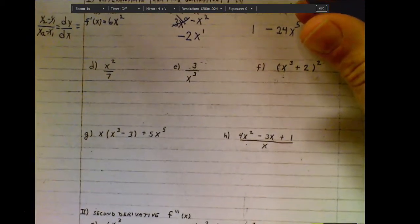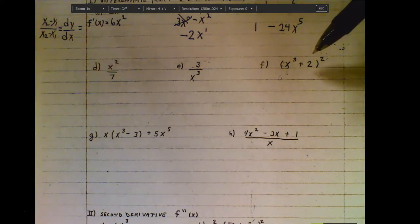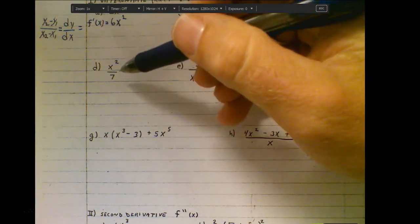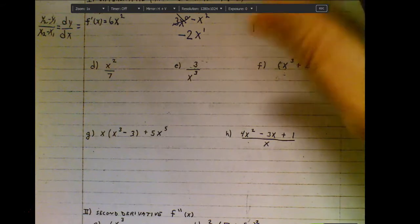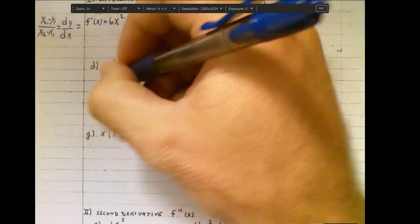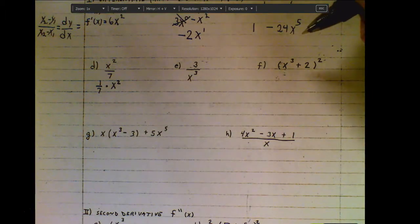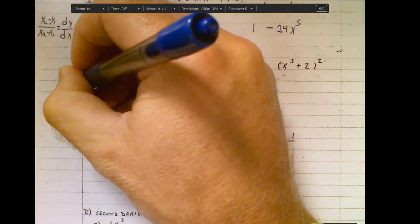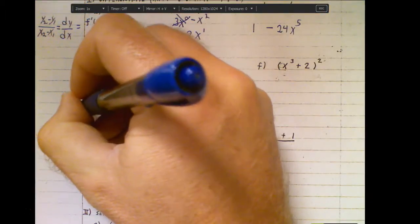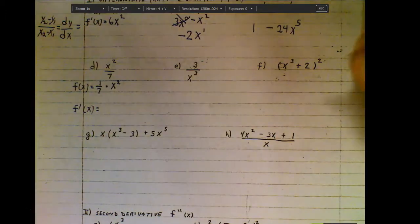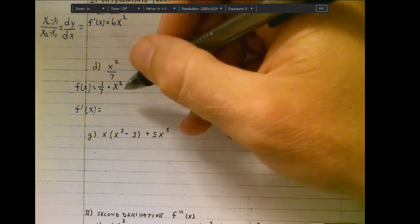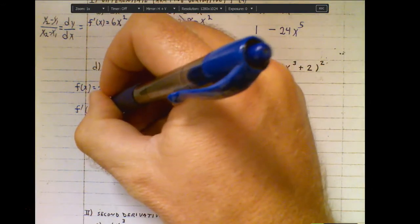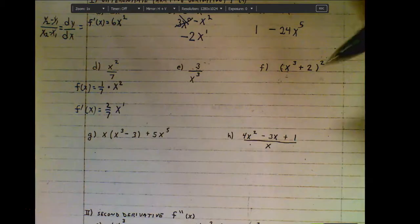Moving on to part d — with some of these, you have to put them into friendlier terms in order to differentiate, because it might be hard to see with the way they're written. For example, this one might be easier to see as one seventh times x squared — that means the same thing. So applying the power rule: two times one seventh is two sevenths, subtract one from the exponent, and there's the derivative.